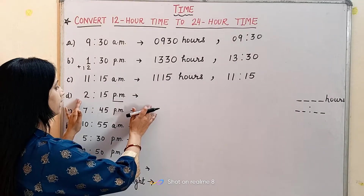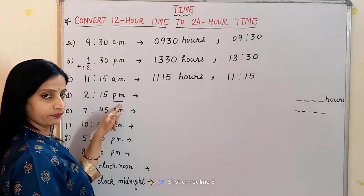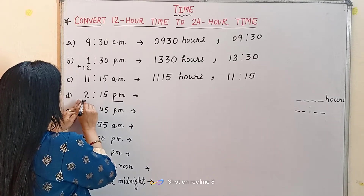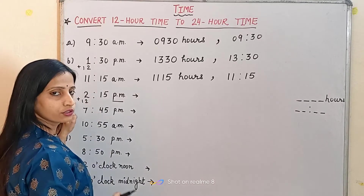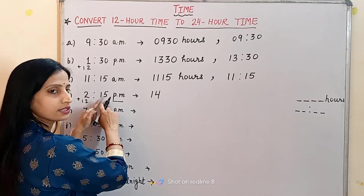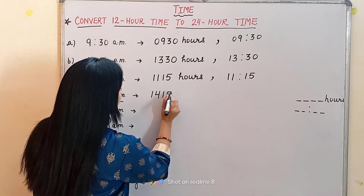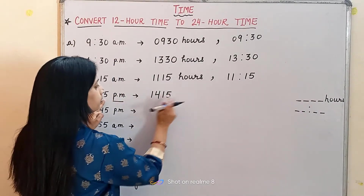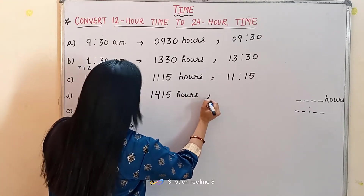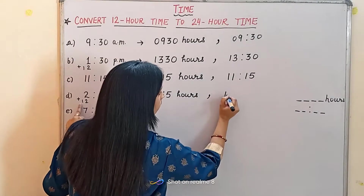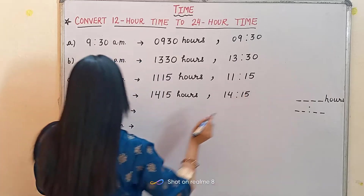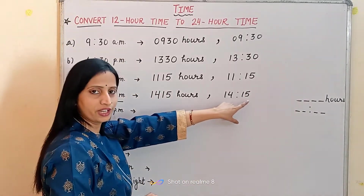Now the next one is 2:15 PM. It is PM, so we will add 12. 12 plus 2 is 14, so we write 1415, then 'hours'. The second way: we write 14, put the colon, and write 15. So the time is 14 hours 15 minutes.